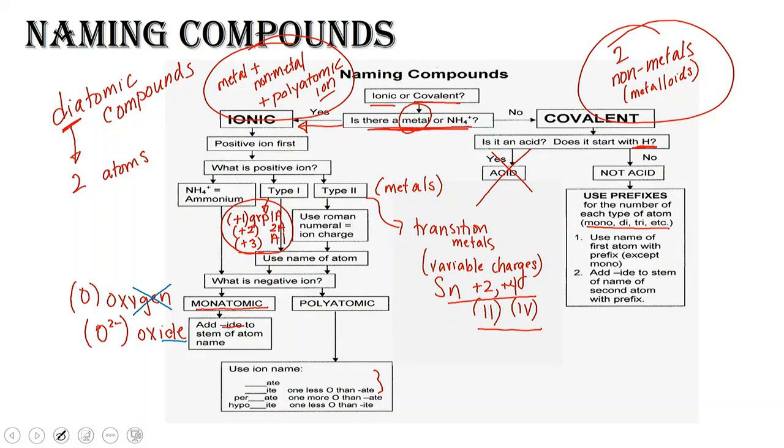So if the first name keeps its name, but you add the prefix, the second atom that you see, you still have to add the prefix, but it's just like when we did that ionic naming where we drop the ending and add -ide. You're going to drop the ending and add -ide.